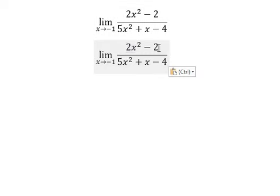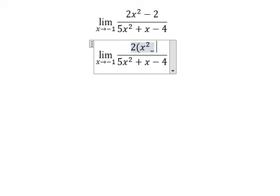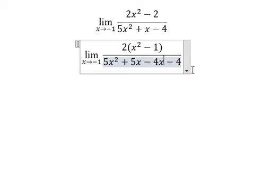So number two, we can do factorization. For the denominator, that is 5x² plus x minus 4x, which is 5x² plus 5x minus 4x.